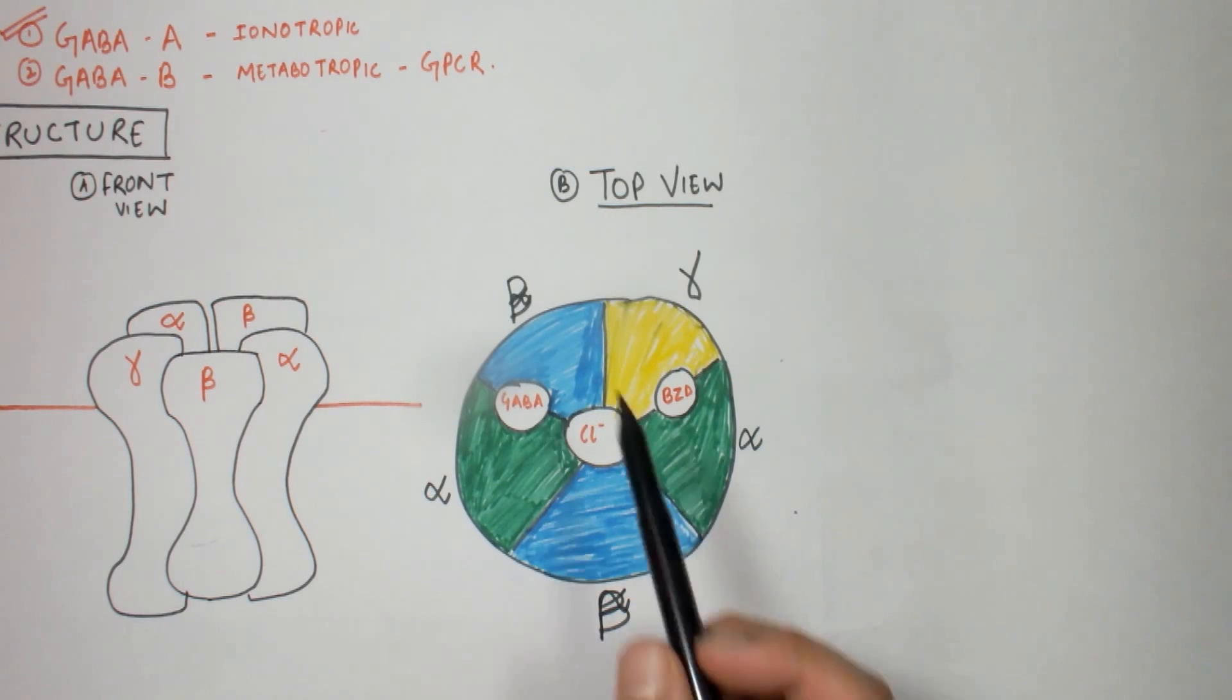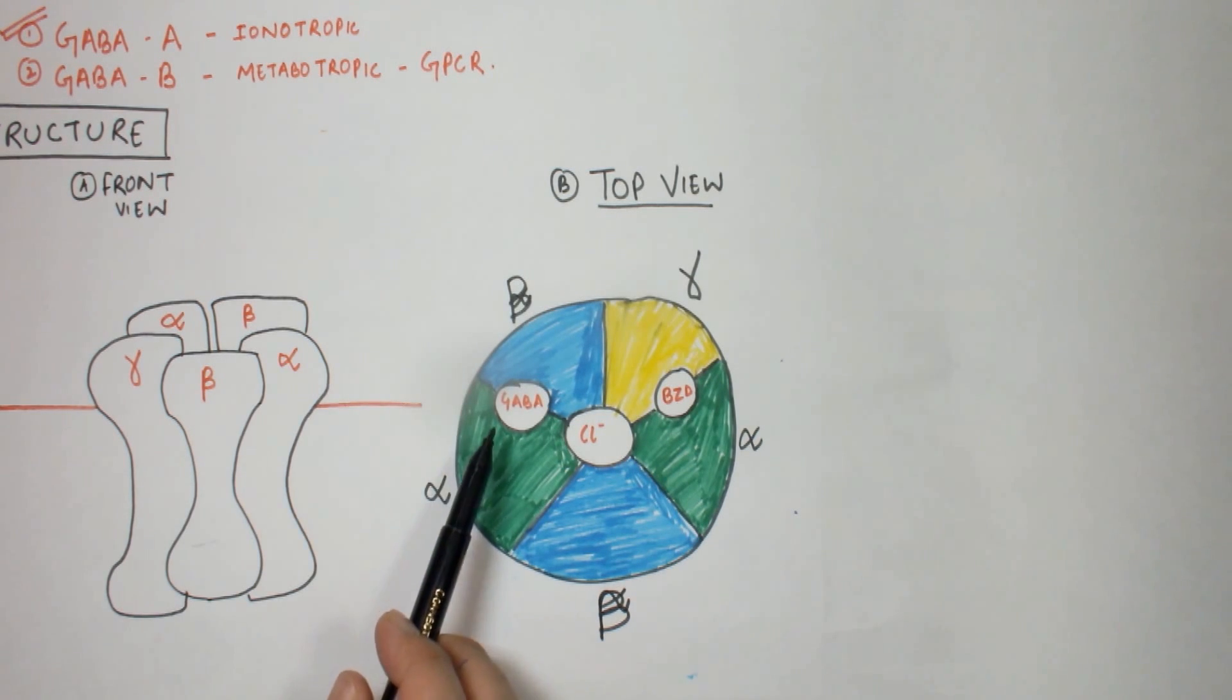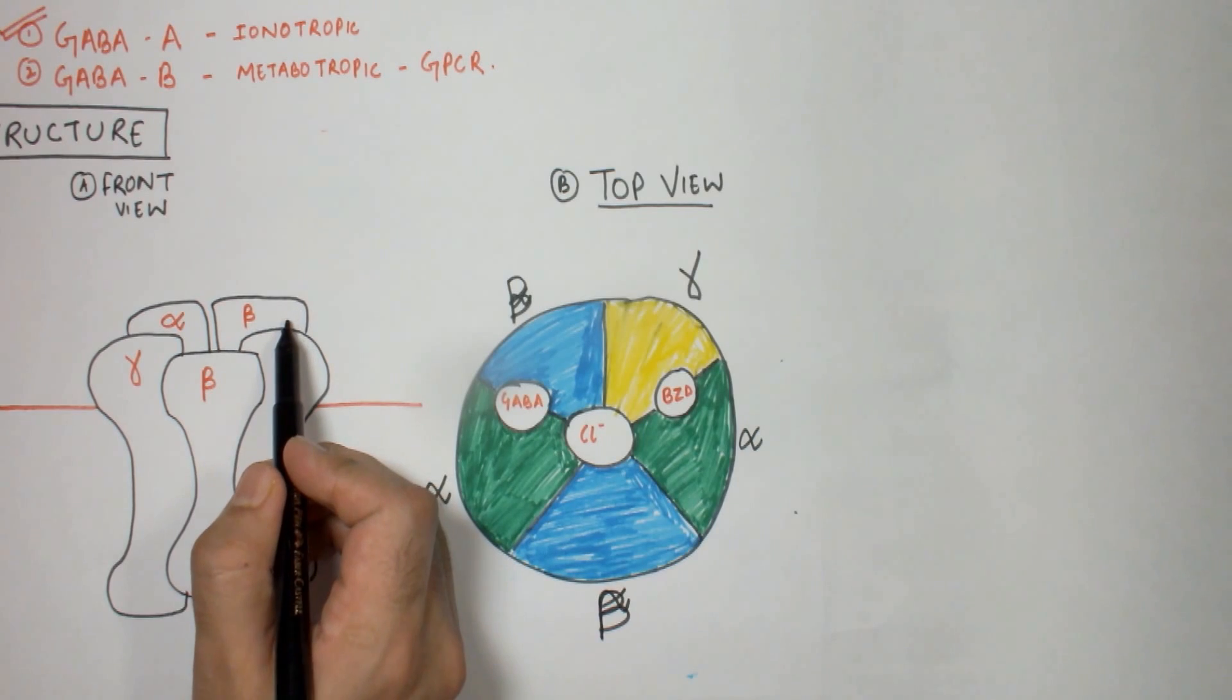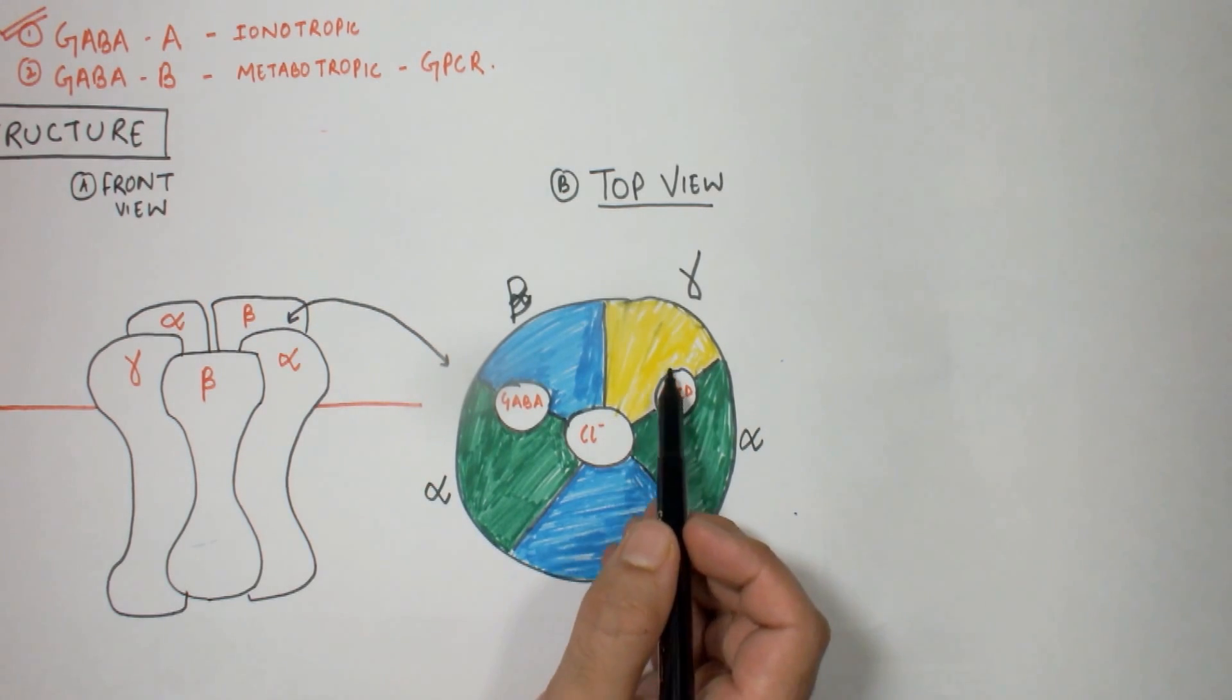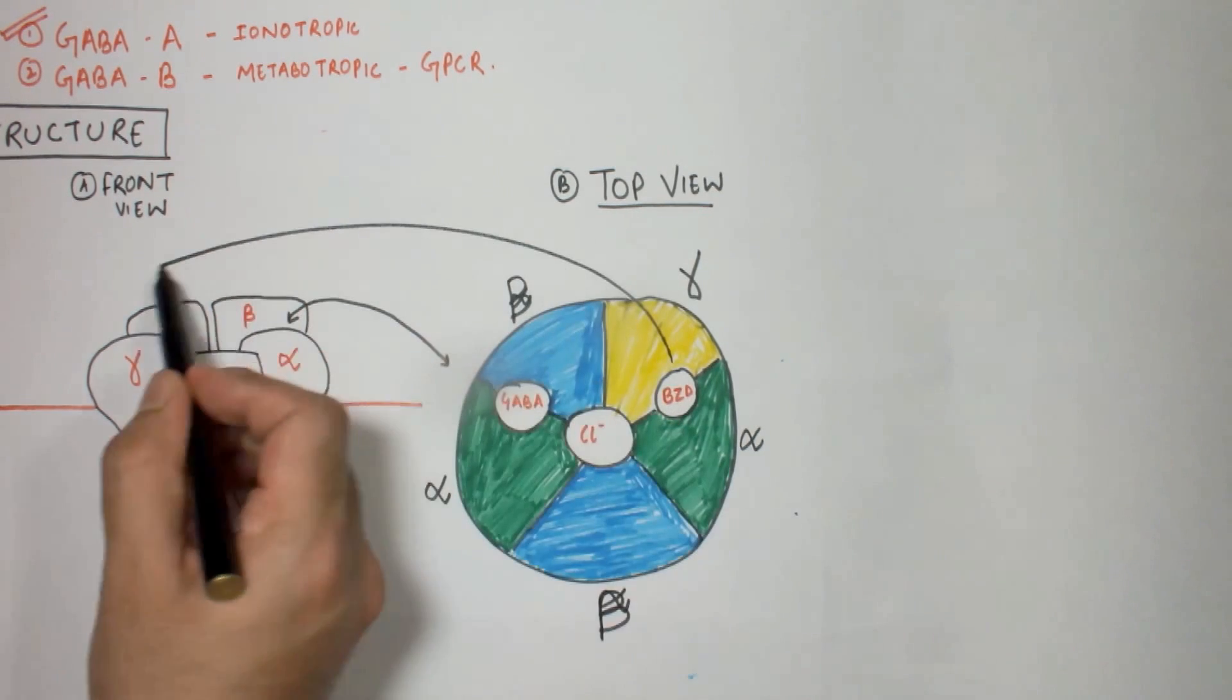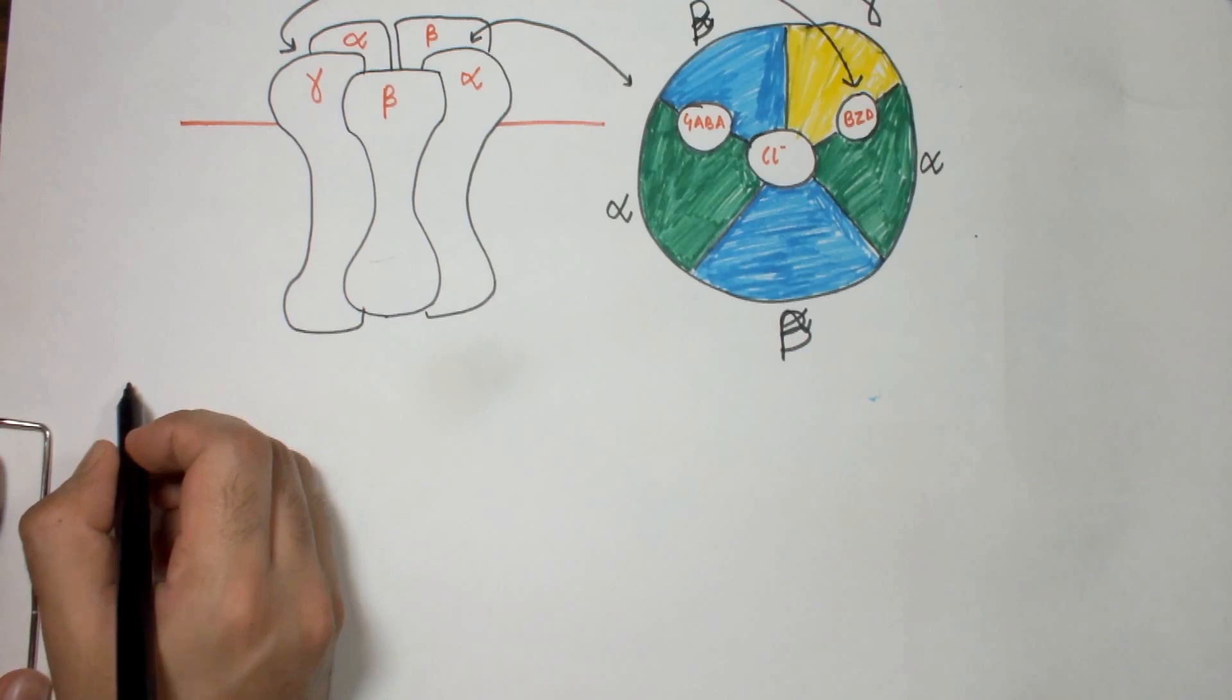Okay, now two alpha subunits, two beta subunits, and one gamma subunit. Between the alpha and the beta subunit is the GABA binding site, same as here on the front view and on the top view. And between the alpha and the gamma subunit is the benzodiazepine binding site or the BZD allosteric site.